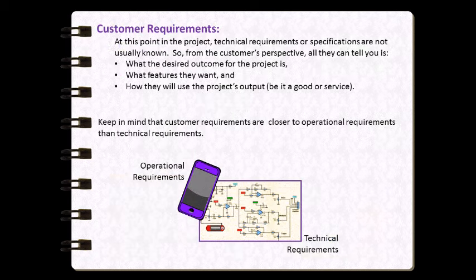The next section we are going to look at is customer requirements. Remember, customer requirements are produced very early on in the project's life cycle. At this point, the technical requirements or specifications are often not known. Most customers can articulate what they would like out of the project — what good or service they would like produced — but they are not always able to specify the steps that will be involved in producing that output. These steps are defined by the project manager and project team later on during the project planning phase. You can think of project requirements as being closer to the operational requirements that need to be fulfilled, as opposed to the technical requirements, specifications, or standards.